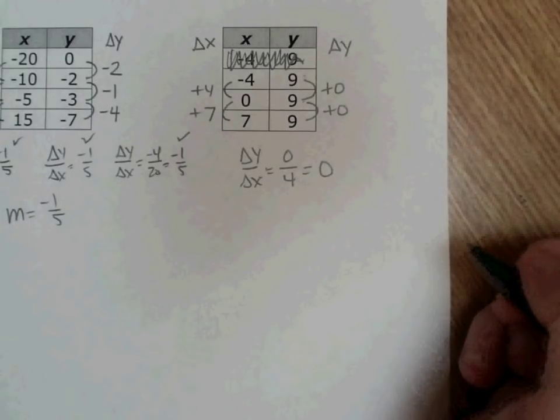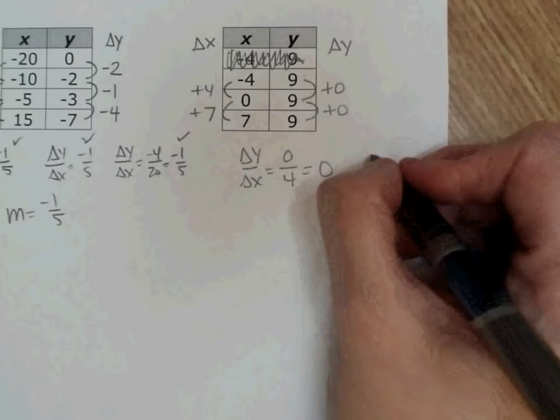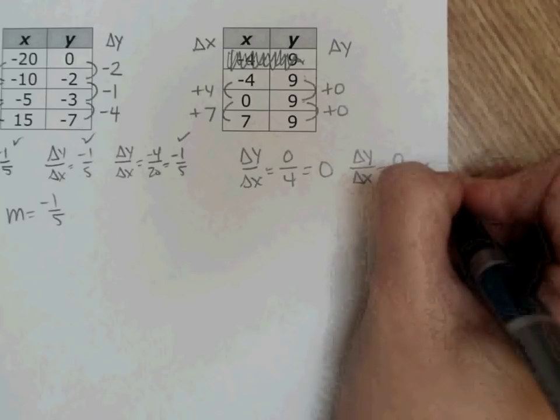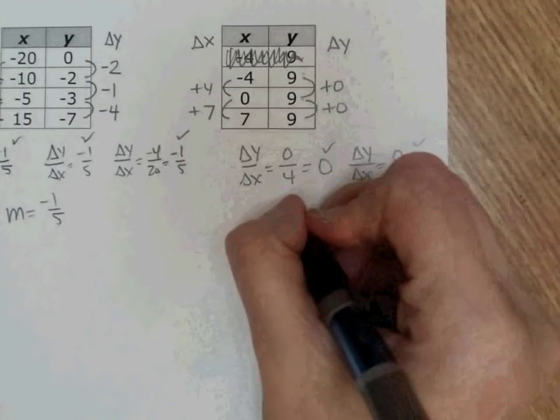0 divided by 4 is 0 because 0 divided by anything is 0. I want to do the same thing here. Delta y over delta x, I get 0 over 7, which is also 0. They're the same, so my slope is 0.